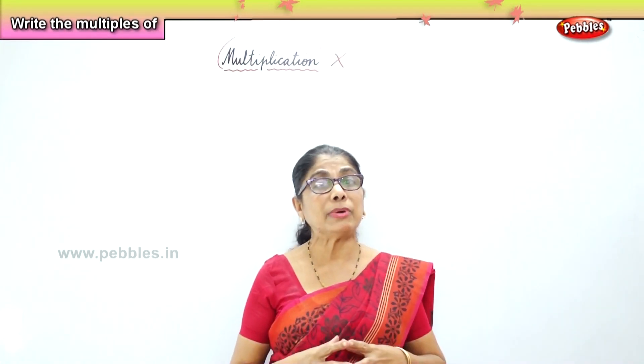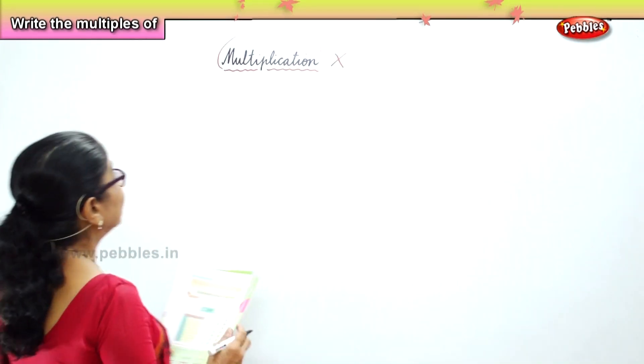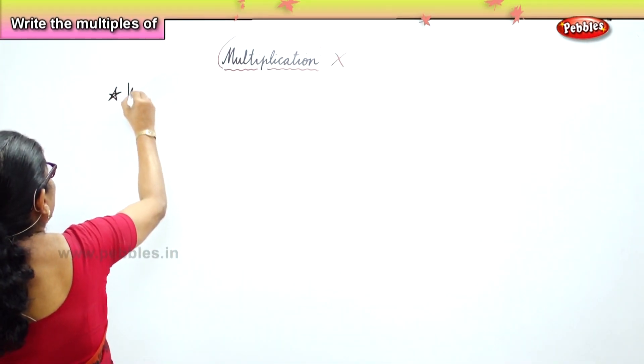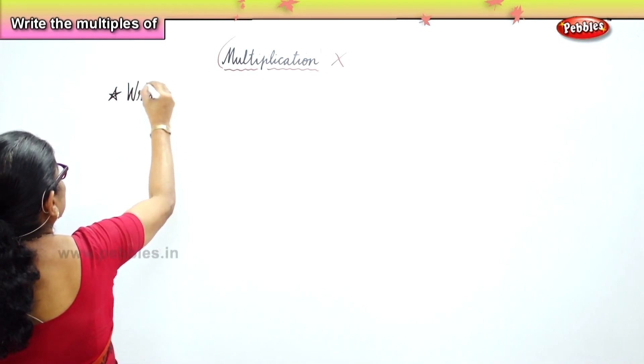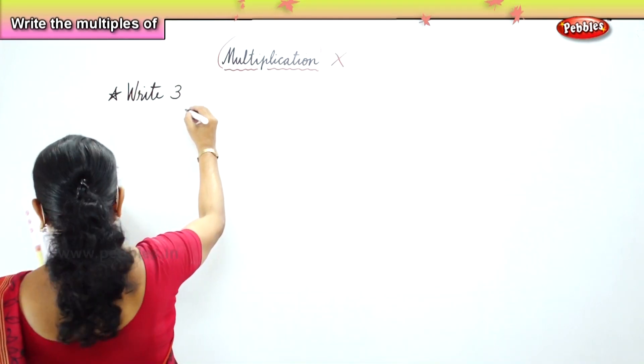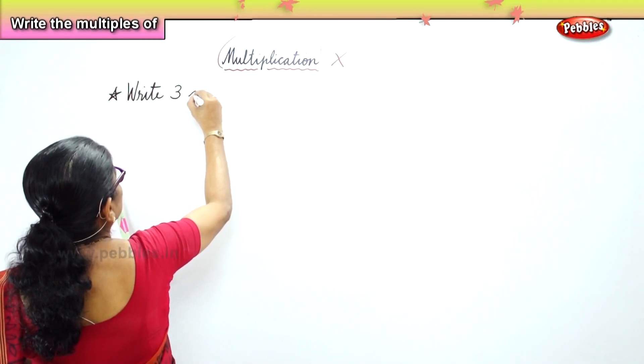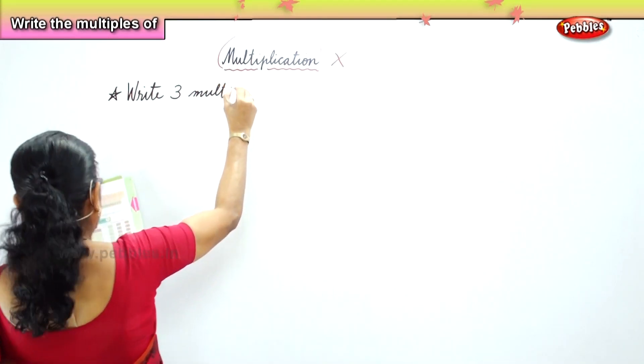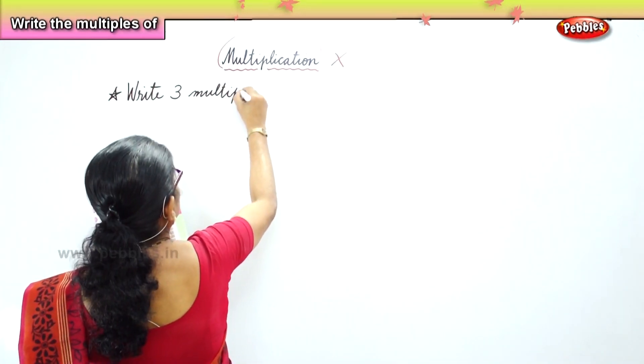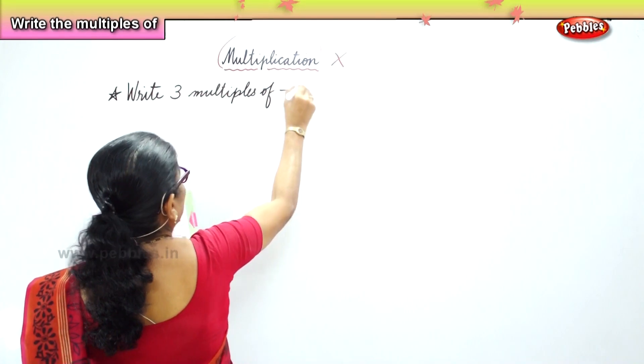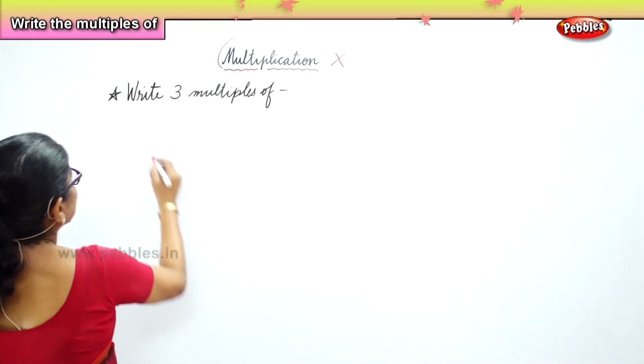Hi children! Having learned multiplication and having memorized the tables, we should be able to do multiples of any number given. Write three multiples of — that's what we are going to do. If you know the tables, we can do it.